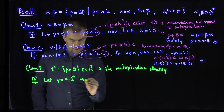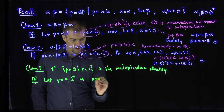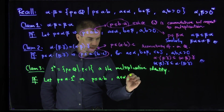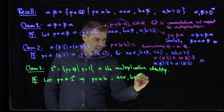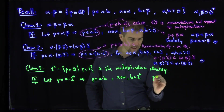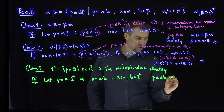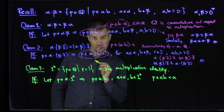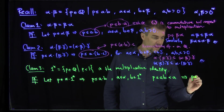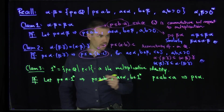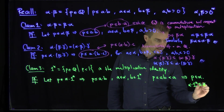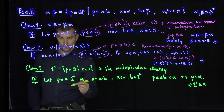Let p be in the set α·1*. That implies that p is less than or equal to a times b, where a is in α and b is in 1*. And so b being in 1* means that b is less than one. So p is less than or equal to a·b, which is strictly less than a because b is strictly less than one. This says p is less than a, so p is in α. This allows me to conclude that α·1* is contained in α.